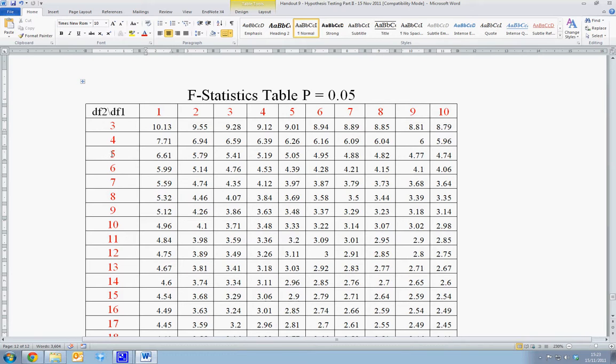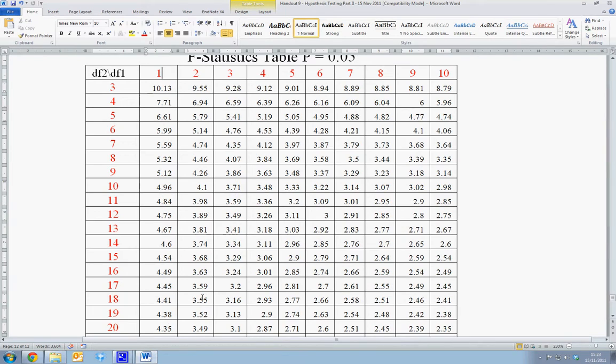So in the example, we can have two constraints, 18 degrees of freedom given by n minus k, and we will get an F-critical value of 3.55.